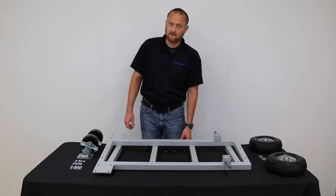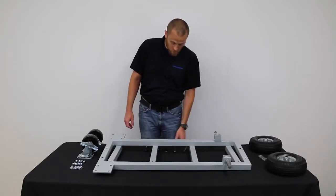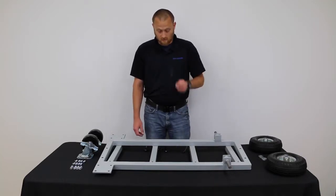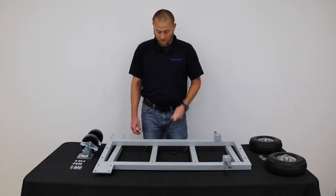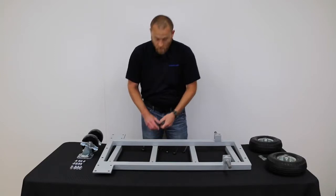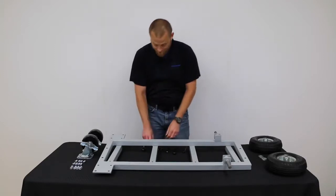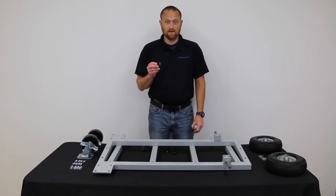Tools you need to assemble your single-sided shop cart are a 14 millimeter combination wrench, 17 millimeter combination wrench, nine-sixteenths combination wrench, three-inch drive ratchet, nine-sixteenths socket, a 14 millimeter socket, and a 17 millimeter socket.